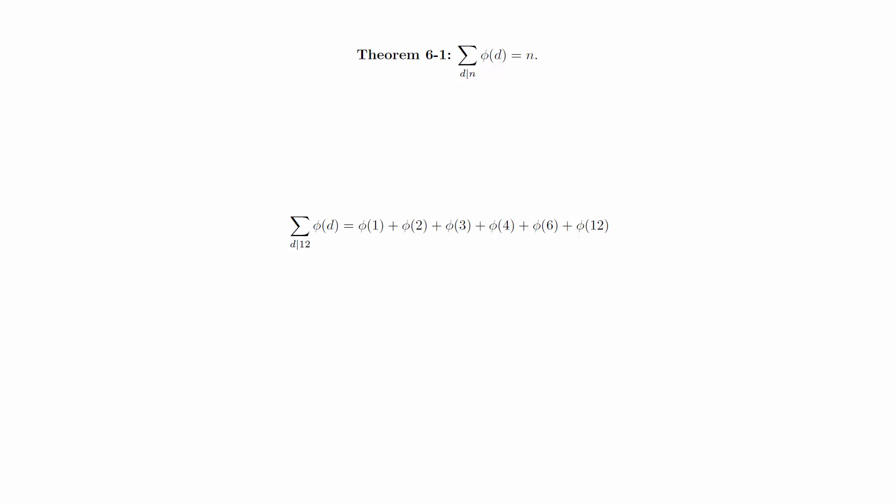Here is an explicit example. And if we actually calculate the phi function for each of these values and add the result, we happen to get 12, just as the theorem says.